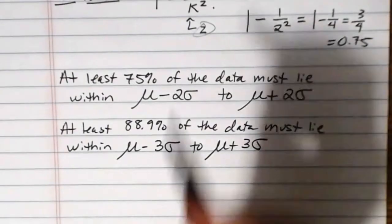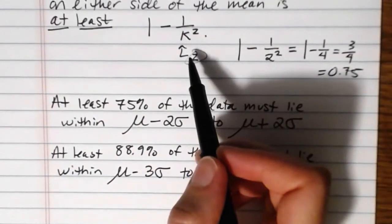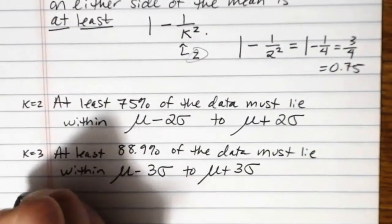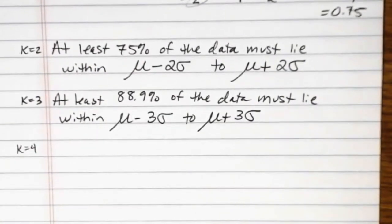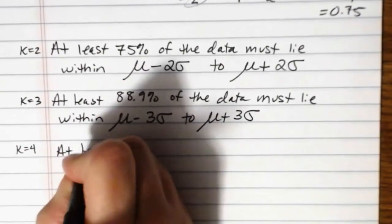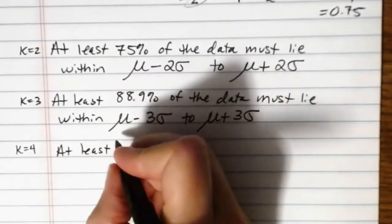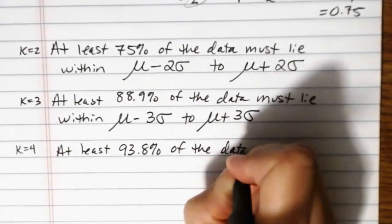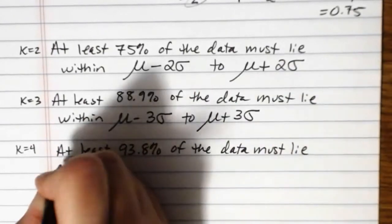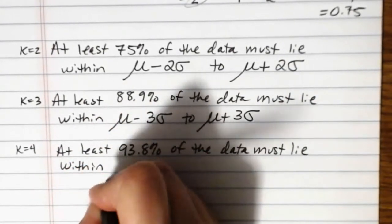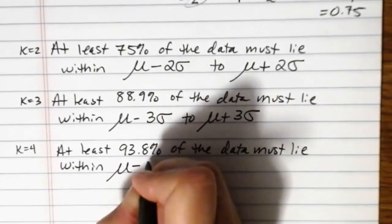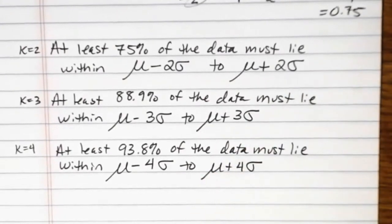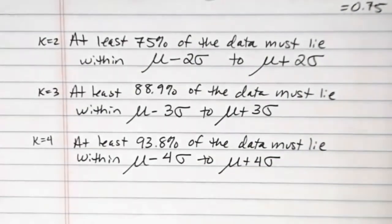And if we go out to using the number 4 here for k, if we were to put in k equals 4, that result from Chebyshev's theorem tells us that at least 93.8% of the data must lie within mu minus 4 sigma to mu plus 4 sigma. 4 standard deviations on either side of the mean. So this is what we know.